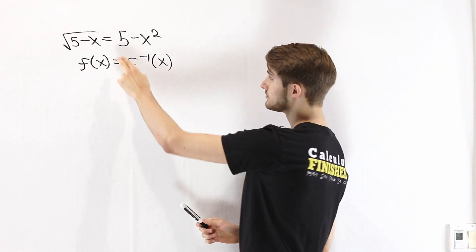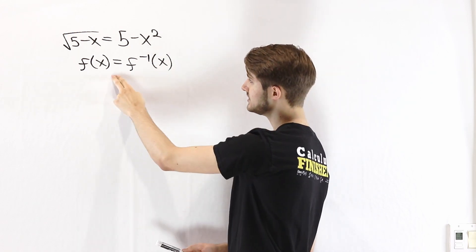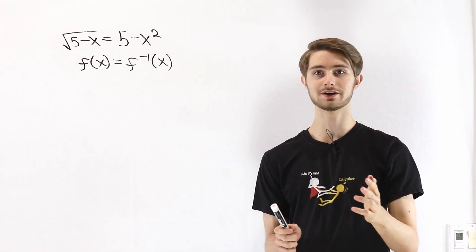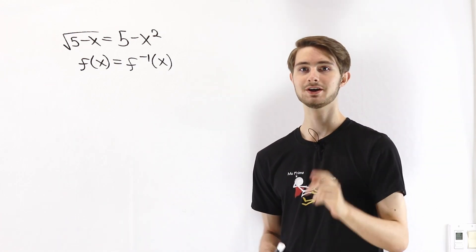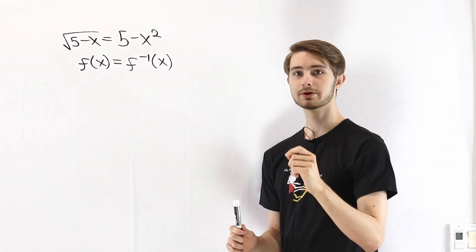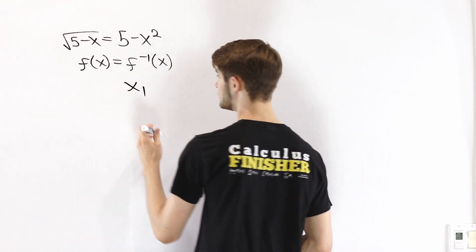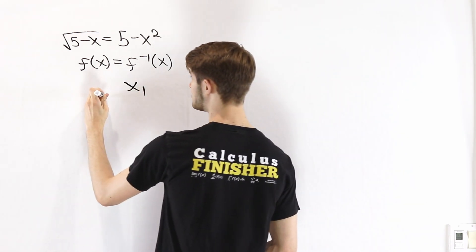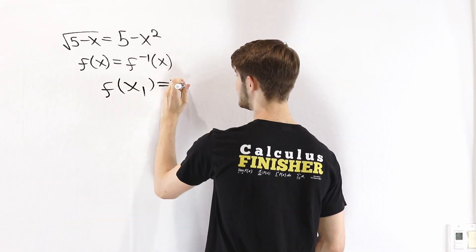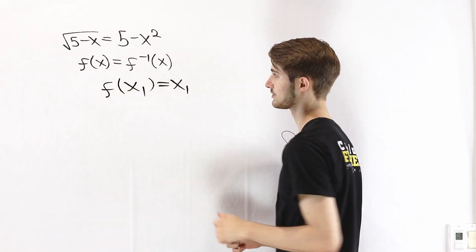This means our original equation is of the form f of x equals f inverse of x. If you've seen the video on this channel about the coffin problem, you might see where this is going. Suppose we have some number x1 where plugging that value into the function gives the same number out — so f of x1 equals x1.